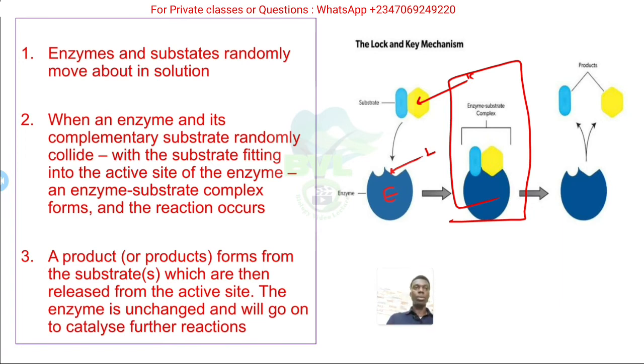So, the enzymes and substrates randomly move about in solution. But when an enzyme and its substrates randomly collide with the substrate fitting into the active site of the enzyme, an enzyme substrate complex is formed. And the product is, of course, generated afterwards, broken down. Then, the good news is, after that, the enzyme remains the same. So, the enzyme can go on to catalyze further reaction.